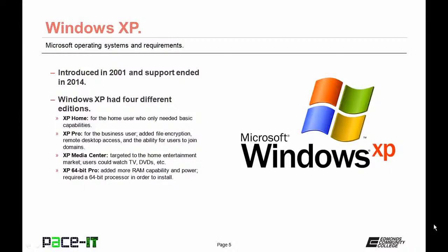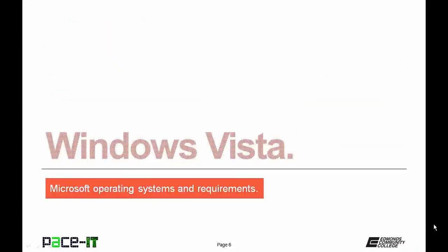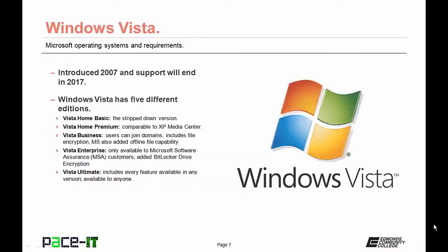64-bit processors were not that common back then. Windows Vista was introduced in 2007, and support for it ends in 2017. Windows Vista has five different editions. Vista Home Basic is the stripped-down version. Vista Home Premium maps to XP Media Center.